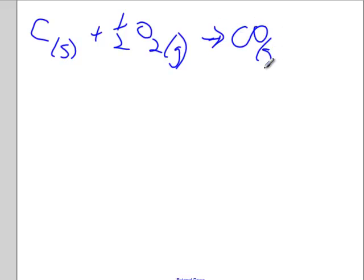For example, we have a reaction: carbon solid plus half an O2. Yes, in thermo we can use fractions when we balance, because we want to leave one mole of carbon here. Goes to carbon monoxide gas. And we want to know what the delta H for this reaction is.